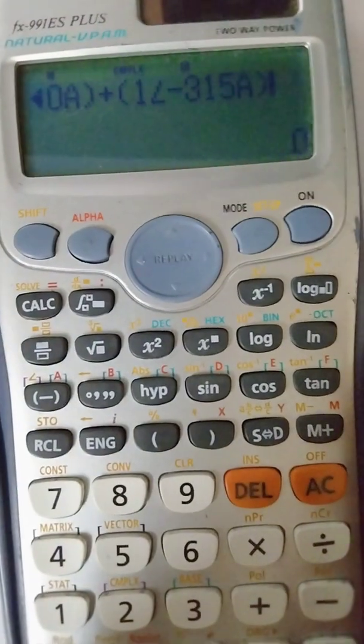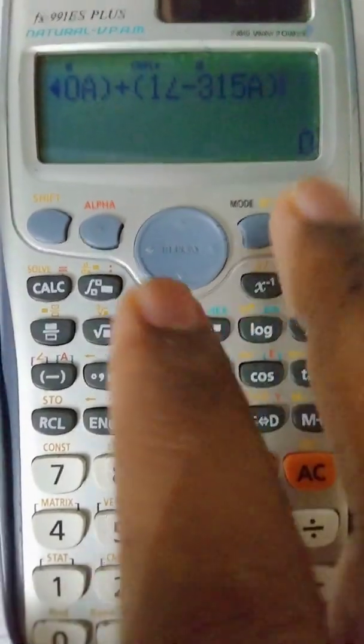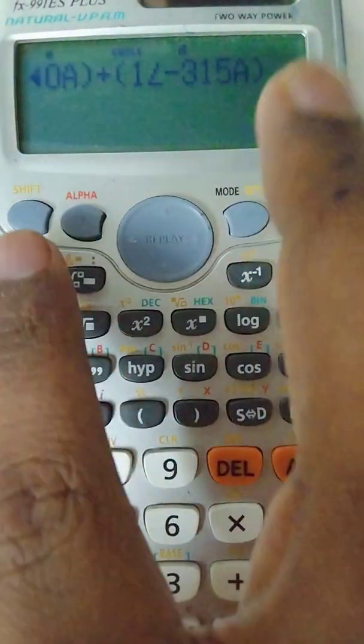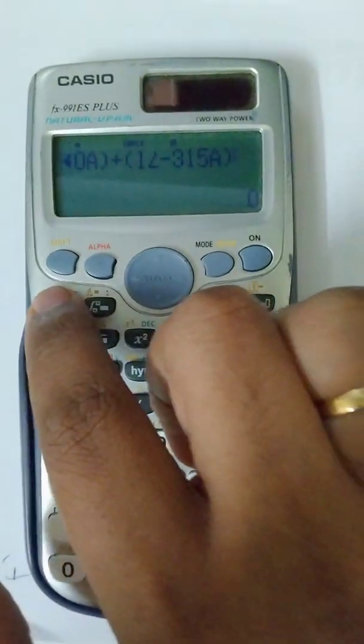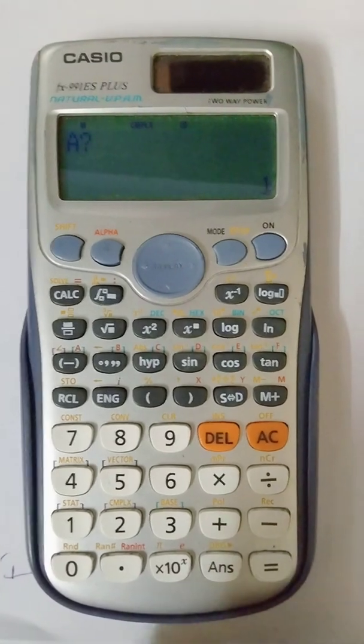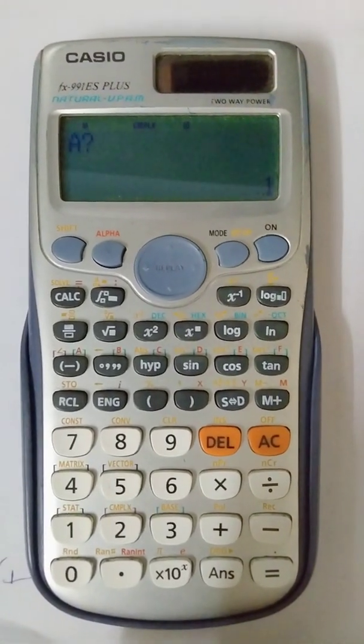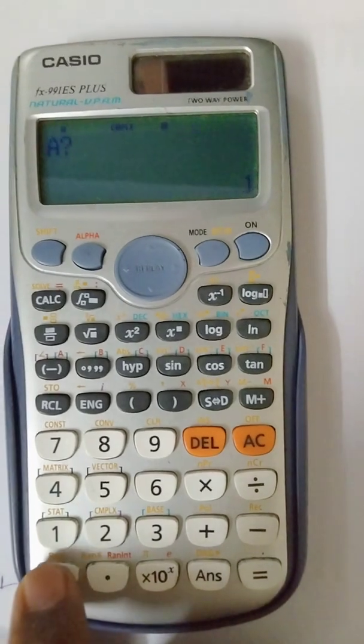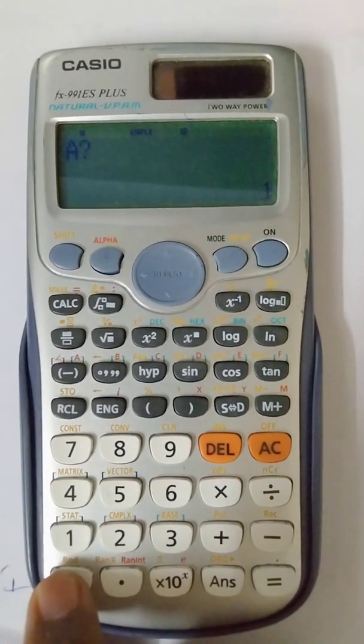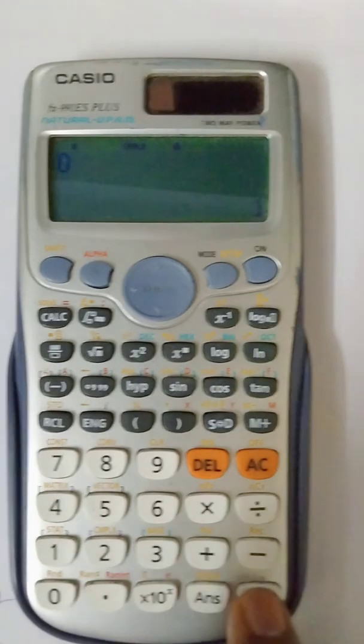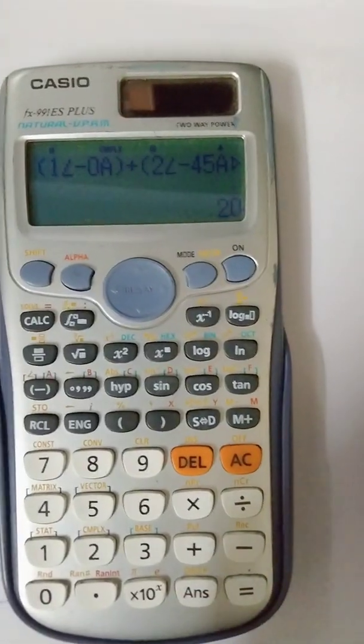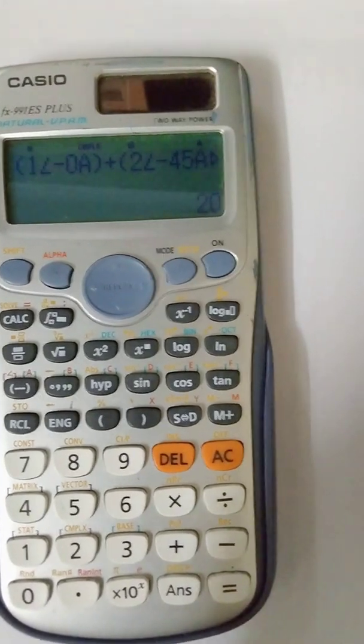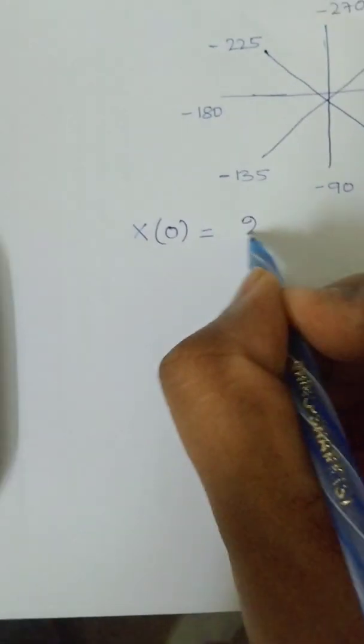And now, in order to find out the values, you need to just press this CALC. CALC - therefore you can just press on CALC, and it will ask you for the values, for the values of K. Then you can just press - enter the same value. If you would like to know about X of 0, press 0 and press on equal to. Therefore, you will be getting the result as X of 0, as you can just note it down as 20.